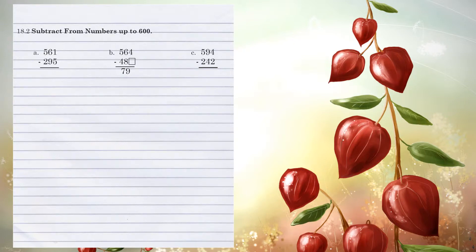Now in the 10's column, you cannot subtract 9 from 5. So we have to go to the 100's column and borrow, making that 5 a 4. That in turn makes the 5 a 15. Now 15 minus 9 gives us 6, and 4 minus 2 gives us 2, for an answer of 266.